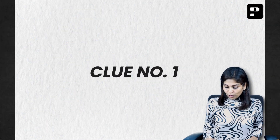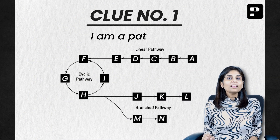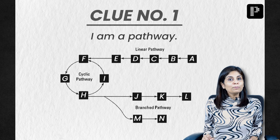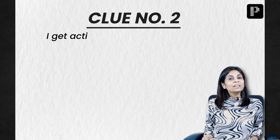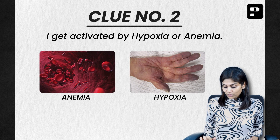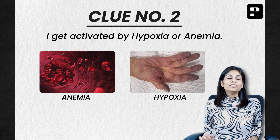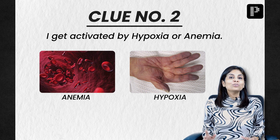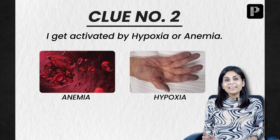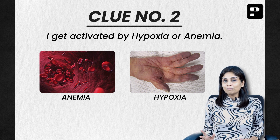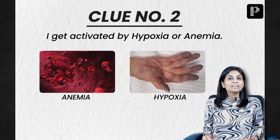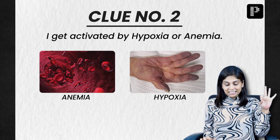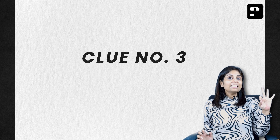Clue number one: I am a pathway. Clue number two: I get activated whenever there is hypoxia or anemia. If you think you know the right answer, you can start typing it in the chat box and wait for the reveal.